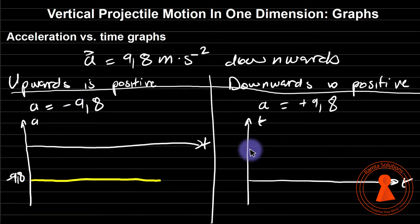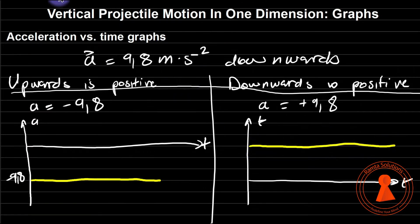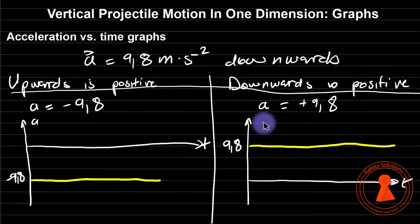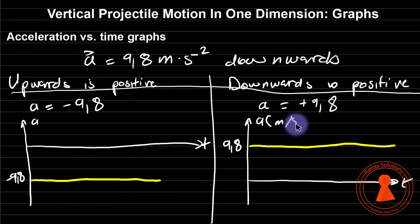In the same way for downwards positive, it will always be constant at 9.8. The vertical axis is acceleration in meters per second squared, and the horizontal axis is time in seconds.